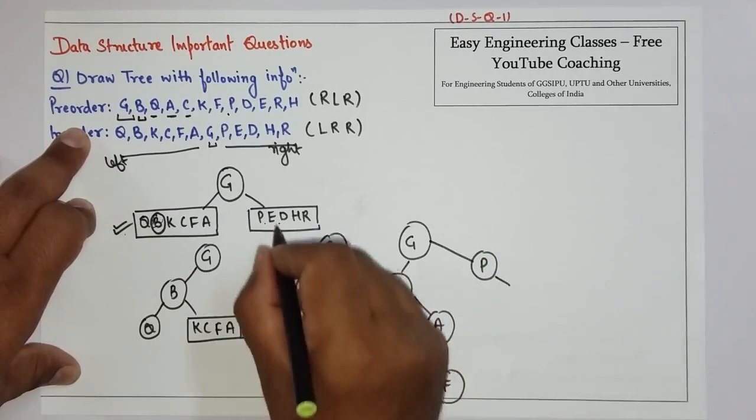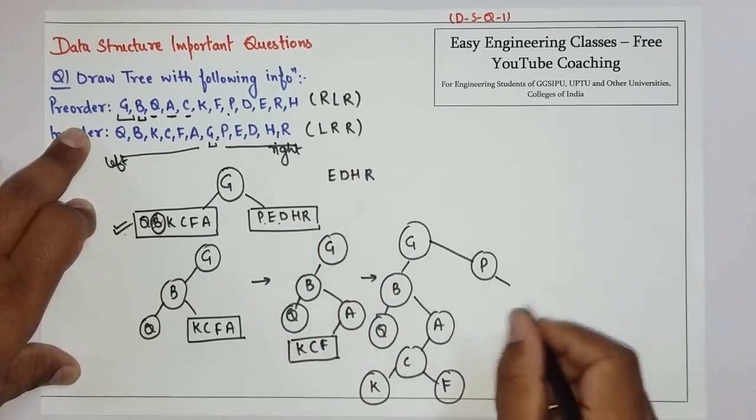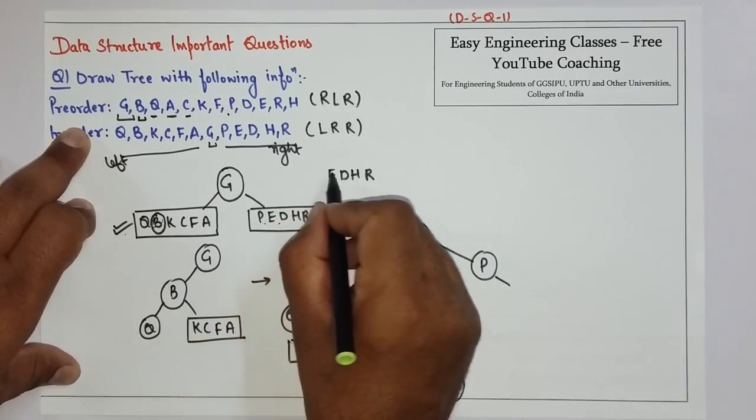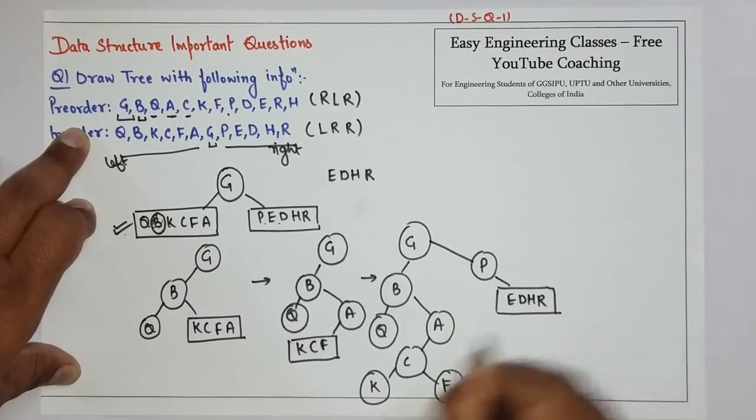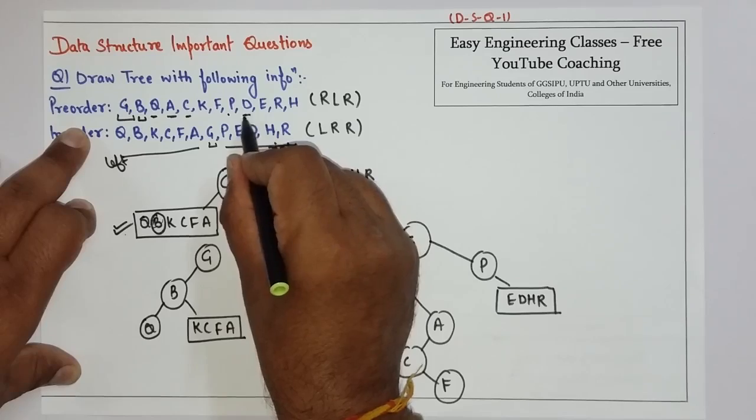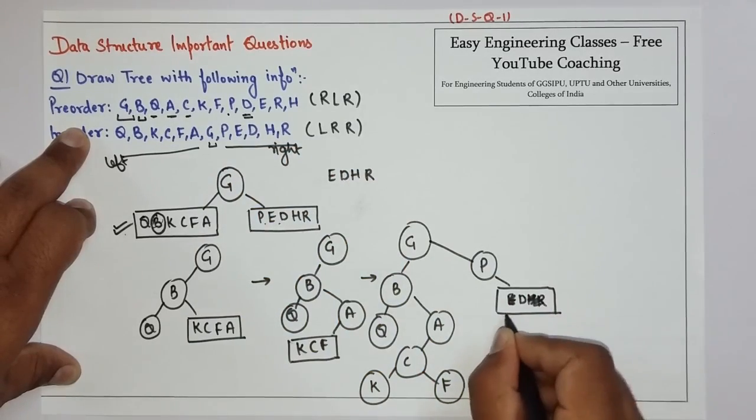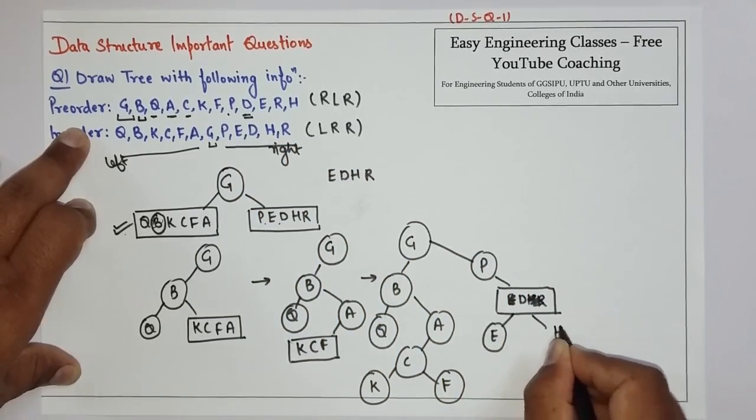Now I have E, D, H, and R which are present on the right side here. Again look for which occurs first. D. So D is the root. On the left we have E, and on the right we have H and R.